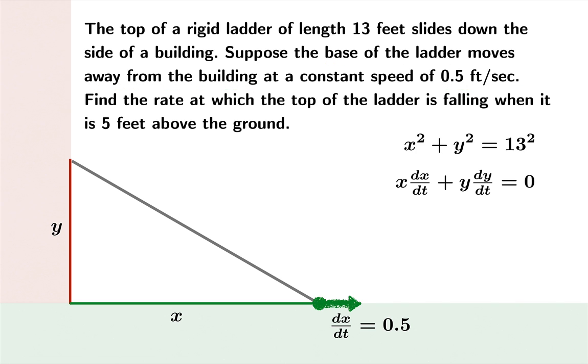We wish to find the rate at which the top of the ladder is falling when it's 5 feet above the ground. In other words, we want to figure out what dy/dt is when y is 5.